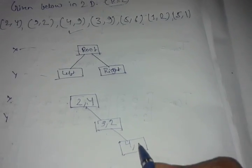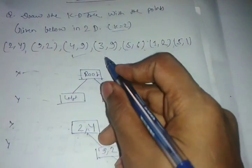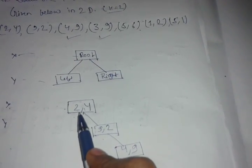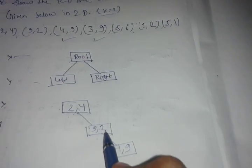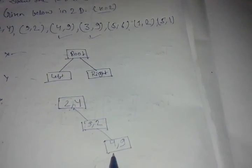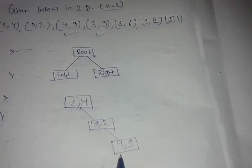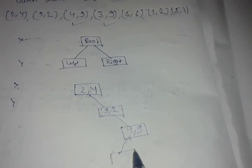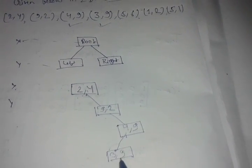Now the next point is (3,9). Start from the root node. 3 will be greater than 2, and 9 will be greater than 2. Now check X. X is 4, which is greater than 3, so (3,9) will become on the left side of this node. So (3,9).